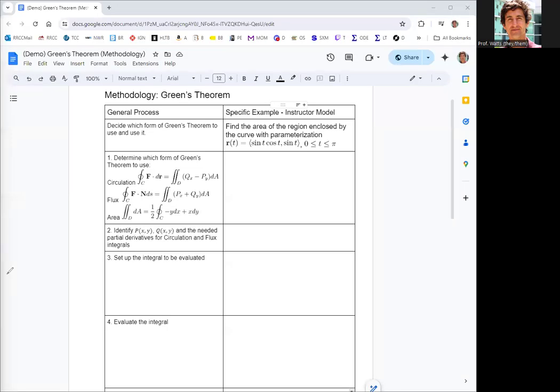In this video, we're going to take a look at Green's theorem, and we're asked in this example to find the area of the region enclosed by a curve with parameterization r, first component function sine of t cosine of t, second component function sine of t, where t goes from zero to pi.